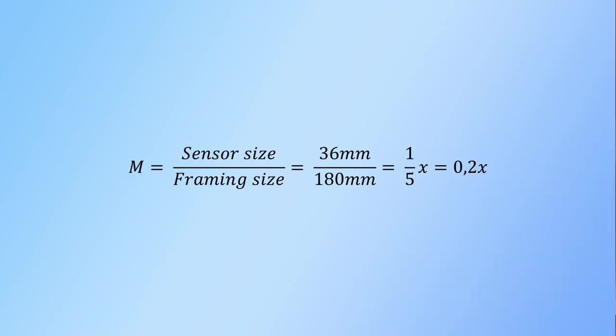For example, if the sensor size is 36 mm wide and the ruler reading shows a measure of 180 mm, then the magnification is 36 mm divided by 180 mm, which gives us one-fifth of an X or 0.2X.